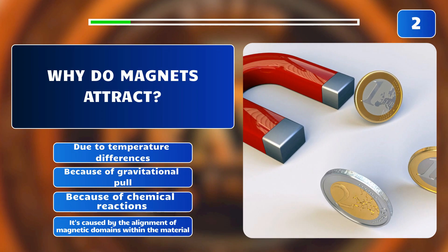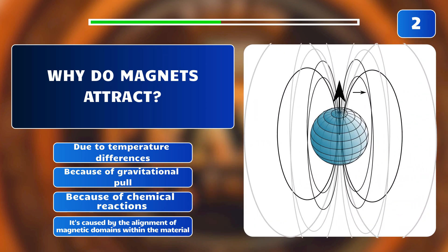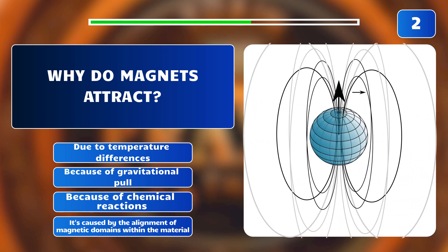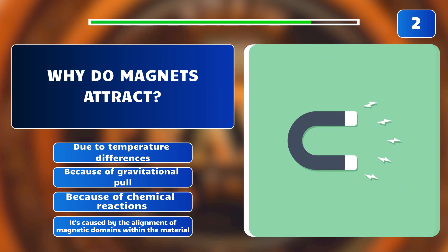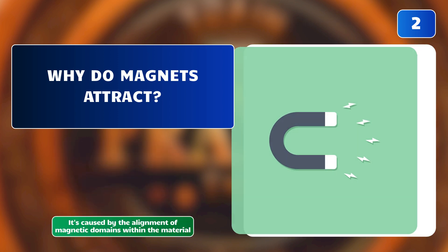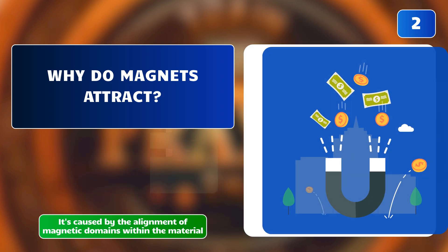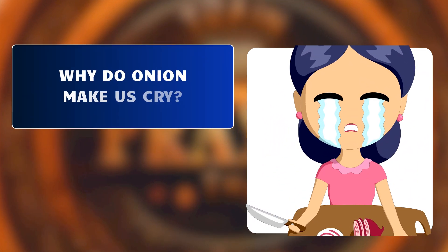Why do magnets attract? Is it due to temperature differences, because of gravitational pull, because of chemical reactions, or because of the alignment of magnetic domains within the material? The answer is: it's caused by the alignment of magnetic domains within the material.